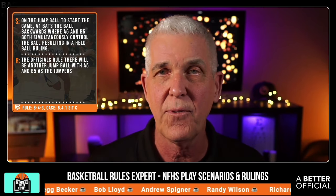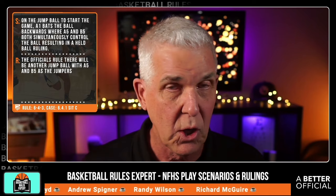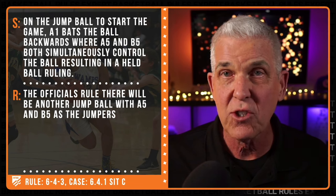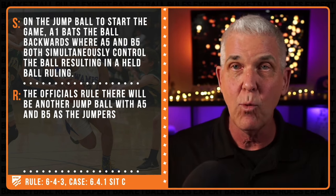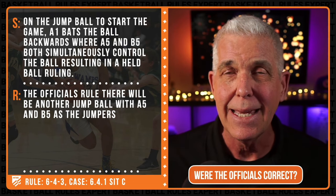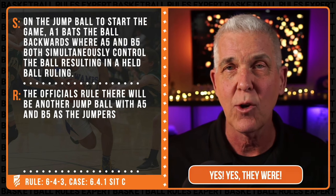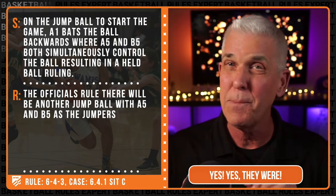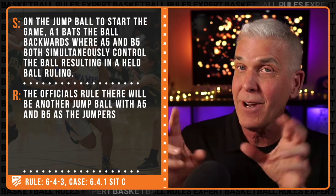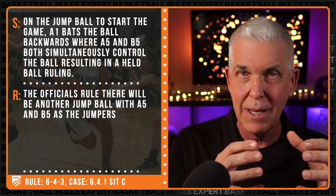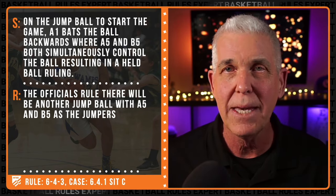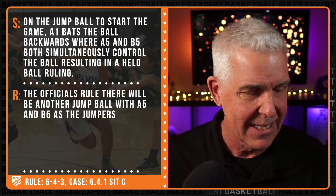There's been no change in National Federation of High School Basketball rules. So in this instance where the officials ruled that A5 and B5 would be the jumpers — were the officials correct, yes or no? Indeed, they were. That is the correct ruling on this play. The players involved in the previous action — meaning A5 and B5 holding the basketball — will be our jumpers in this scenario.